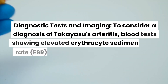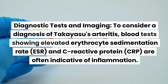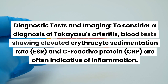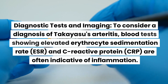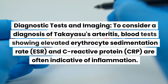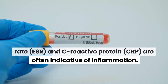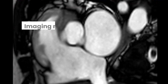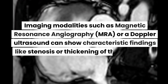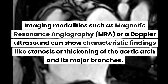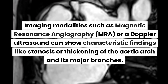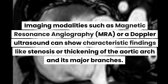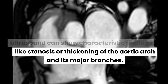Diagnostic Tests and Imaging: To consider a diagnosis of Takayasu's Arteritis, blood tests showing elevated erythrocyte sedimentation rate (ESR) and C-reactive protein (CRP) are often indicative of inflammation. Imaging modalities such as magnetic resonance angiography (MRA) or Doppler ultrasound can show characteristic findings like stenosis or thickening of the aortic arch and its major branches.